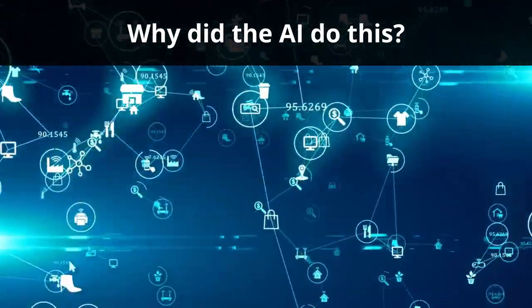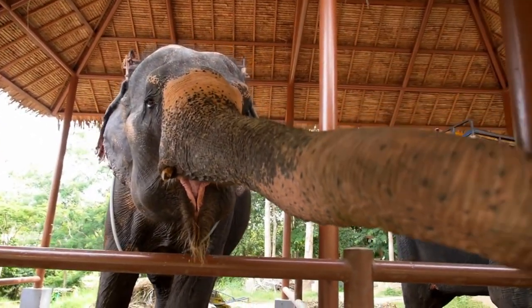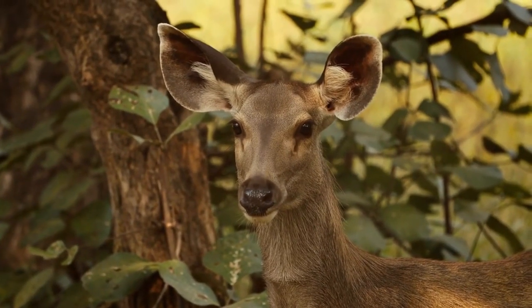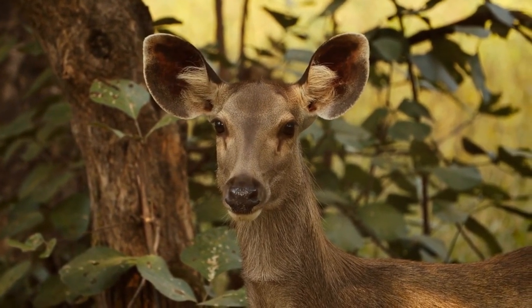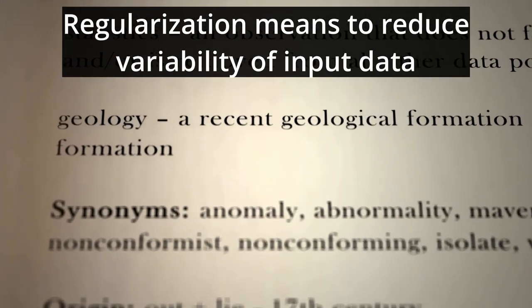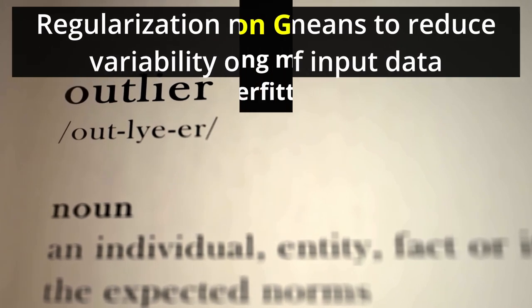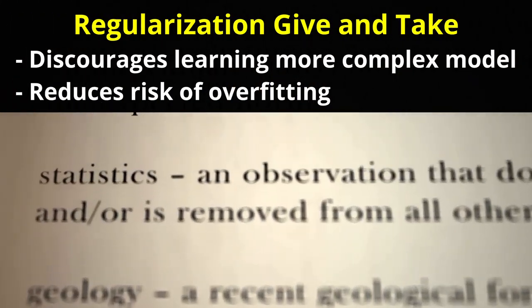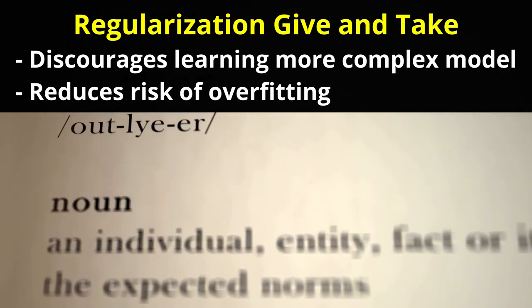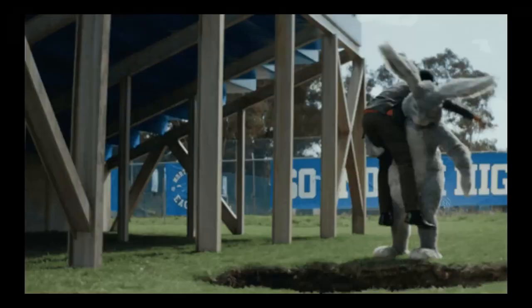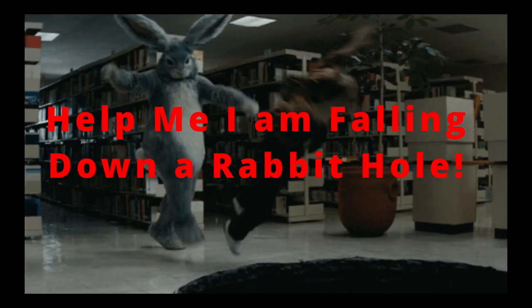One plausible reason for this AI hallucination could be the model's memorization of outlier papers during training. In the training dataset, let's assume there were a few outlier papers that presented climate change as having a positive impact on certain animal species. These papers are outliers in the scientific consensus but were included in the training set for comprehensiveness. An overfit model, especially one without adequate regularization or complexity control, may memorize these outliers. Instead of recognizing these papers as exceptions or anomalies, the model internalizes them as if they hold equal weight to the majority view. This happens because an overfit model lacks the ability to generalize effectively — it pays too much attention to the noise and anomalies in the data, mistaking them for genuine patterns.